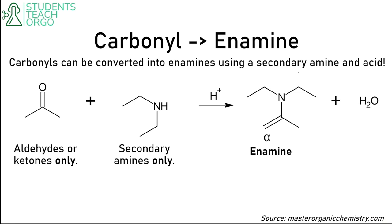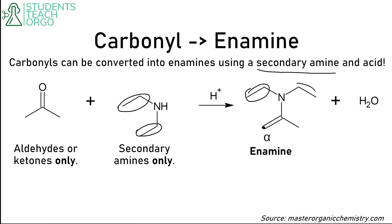Now, carbonyl to enamine. Carbonyls can be converted into enamines using a secondary amine and acid. The most peculiar part of enamines is that they form a double bond at the alpha carbon — the carbon adjacent to the carbonyl carbon. The two groups attached to the nitrogen come from the amine, and the carbon framework comes from the carbonyl.